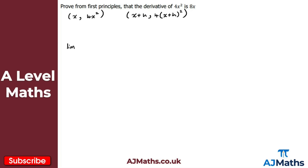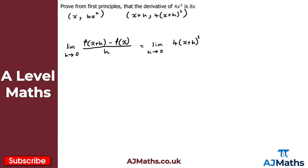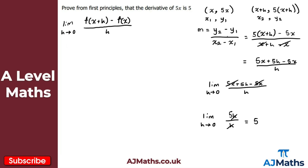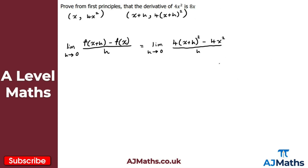Writing the result for differentiation from first principles: the limit as h tends to zero of f(x+h) minus f(x), all over h. The numerator is y₂ minus y₁, so we get the limit as h tends to zero of 4(x+h)² minus 4x², all over h.